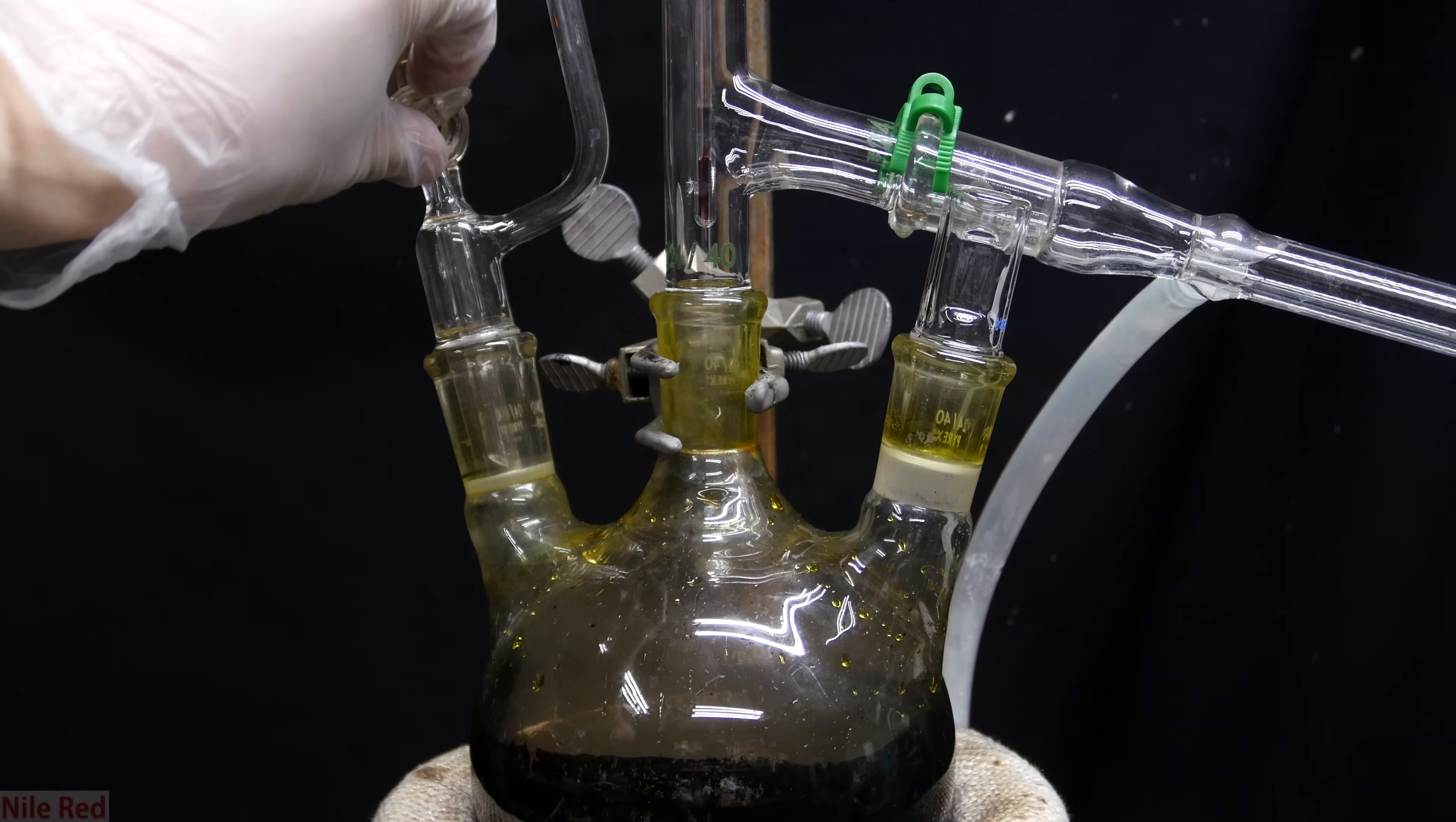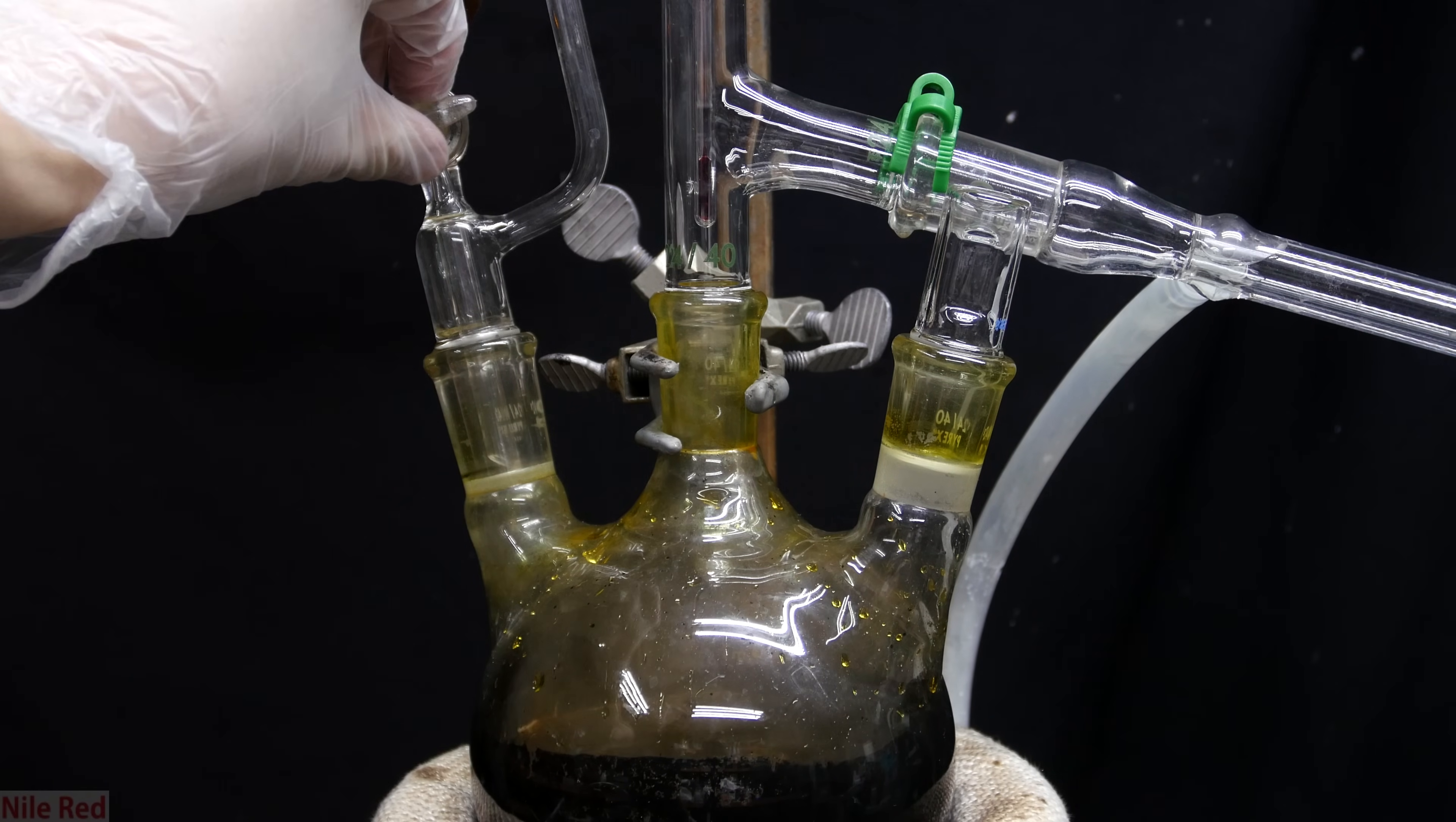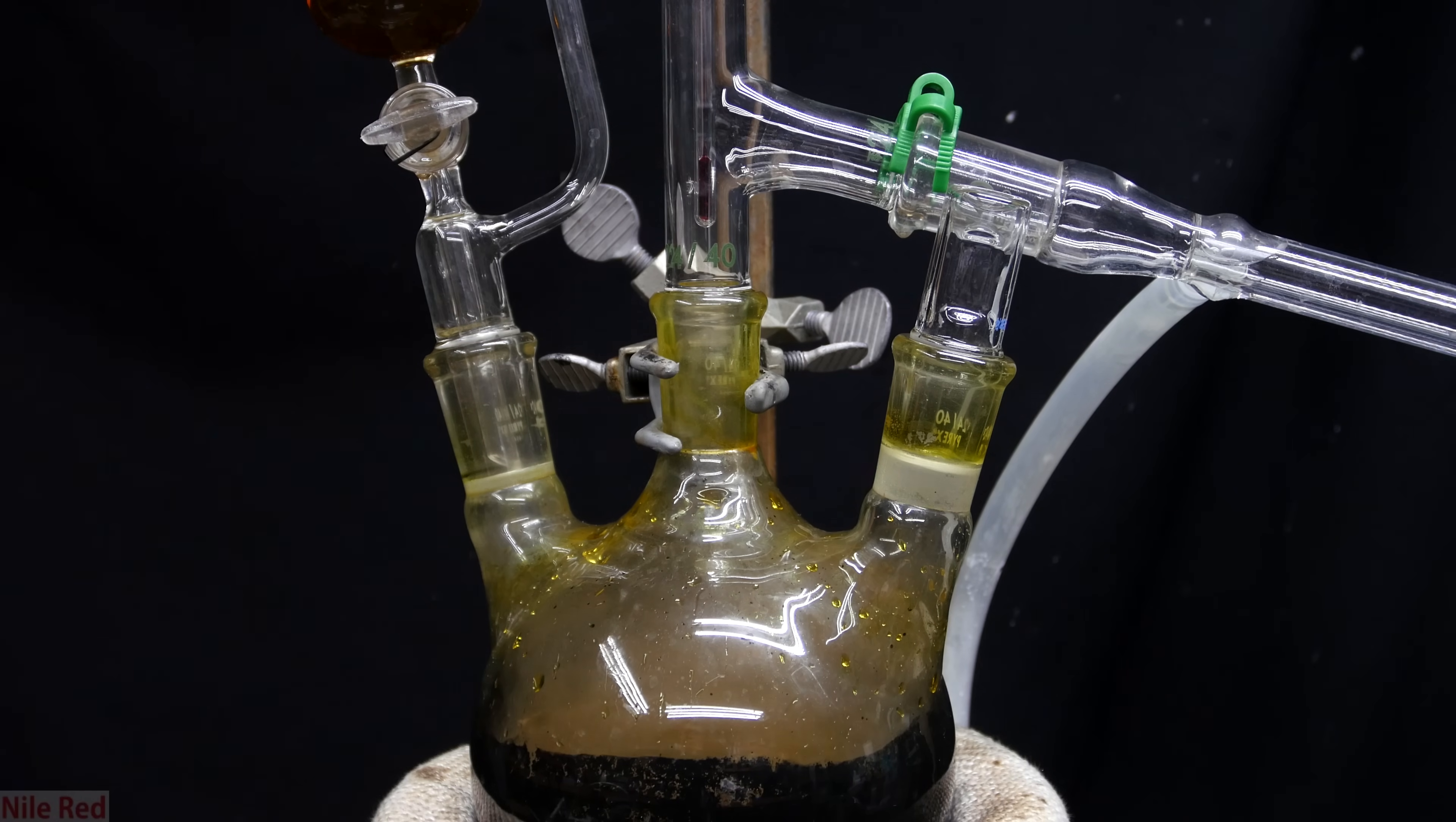It's important to have very strong stirring to make sure that the sulfuric acid that's added gets thoroughly mixed. To do this, we're using that magnetic stir bar that I mentioned earlier, and I have a magnetic stirring plate that's running below. It has a spinning magnet in it, and the magnetic stir bar will follow it as it spins.